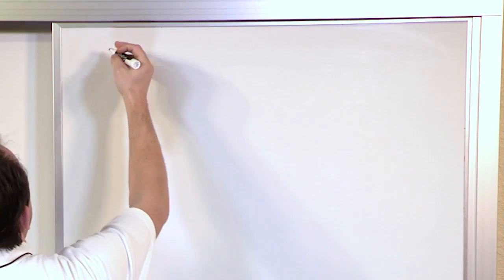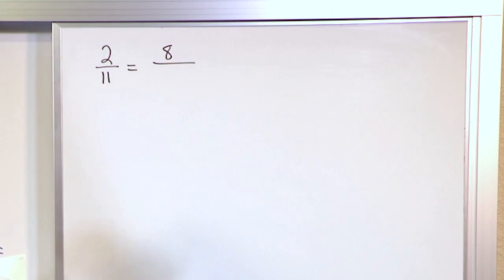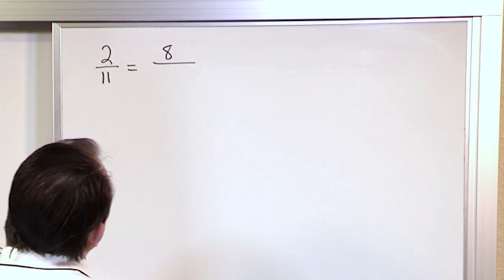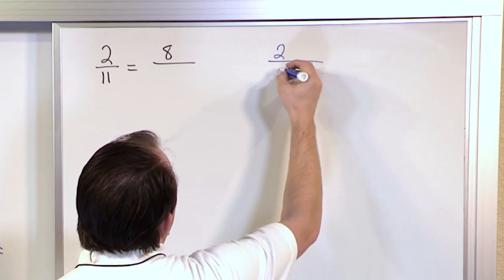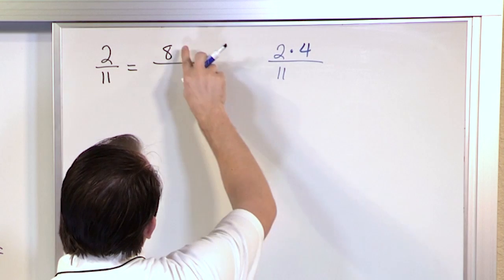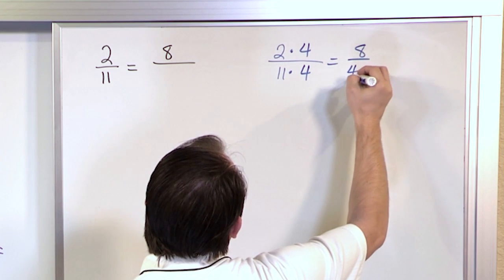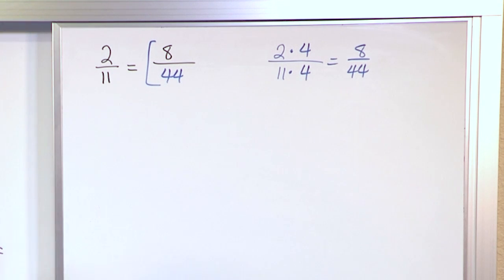Let's work some more just to give you a little more practice. What if I have 2 elevenths, and that's equal to 8 over something — a blank — and I need to figure out what goes there? I'm trying to go from 2 to 8 on the top. 2 times what is going to give me 8? 2 times 4 is 8. So I'll have 2 elevenths, multiply by 4 on the top to give me 8, and I'll also have to multiply by 4 on the bottom. 11 times 4 is 44, so I'll have 8 forty-fourths. That is the final answer.